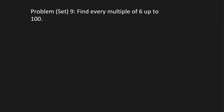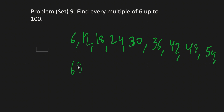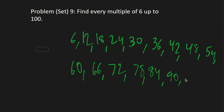Moving on to Problem 9 — find every multiple of 6 up to 100. The multiples are: 6, 12, 18, 24, 30, 36, 42, 48, 54, 60, 66, 72, 78, 84, 90, and 96. That's all, because the next one would be 102, which is over 100.